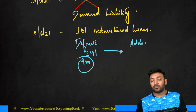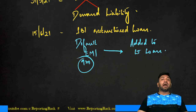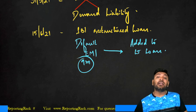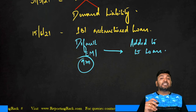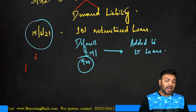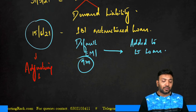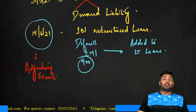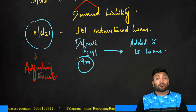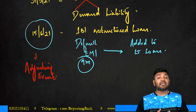SBI restructured the loan so that the defaulted EMIs from 1st April 2020 to 31st December 2020 were spread over the remaining loan term. If such a restructuring event occurs after the balance sheet date, it should be considered as an adjusting event — even if it occurs after the board of directors have already adopted or approved the financial statements. Even after board approval, if you receive such a restructuring arrangement, it must be treated as an adjusting event.